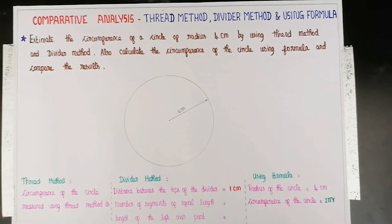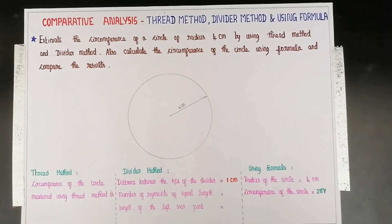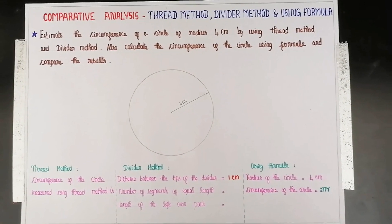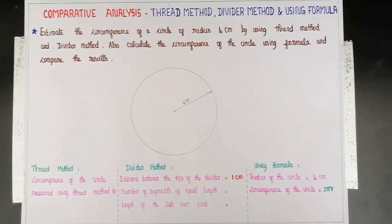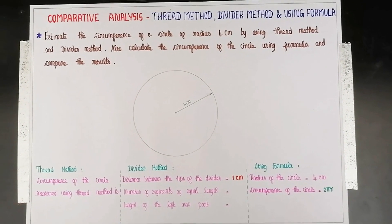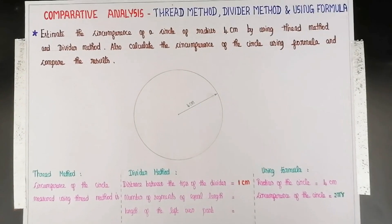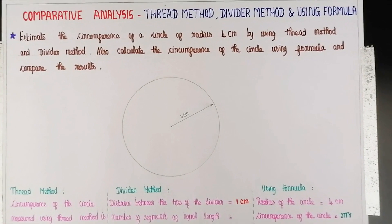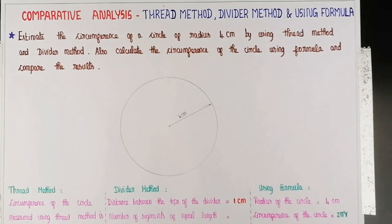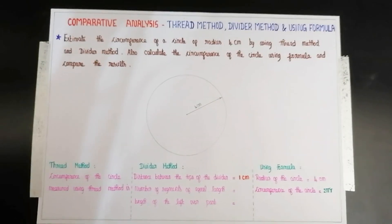For this I will take you through an activity to estimate the circumference of a circle of radius 4 cm by using thread method and divider method. Also calculate the circumference of the circle using formula and compare the results.